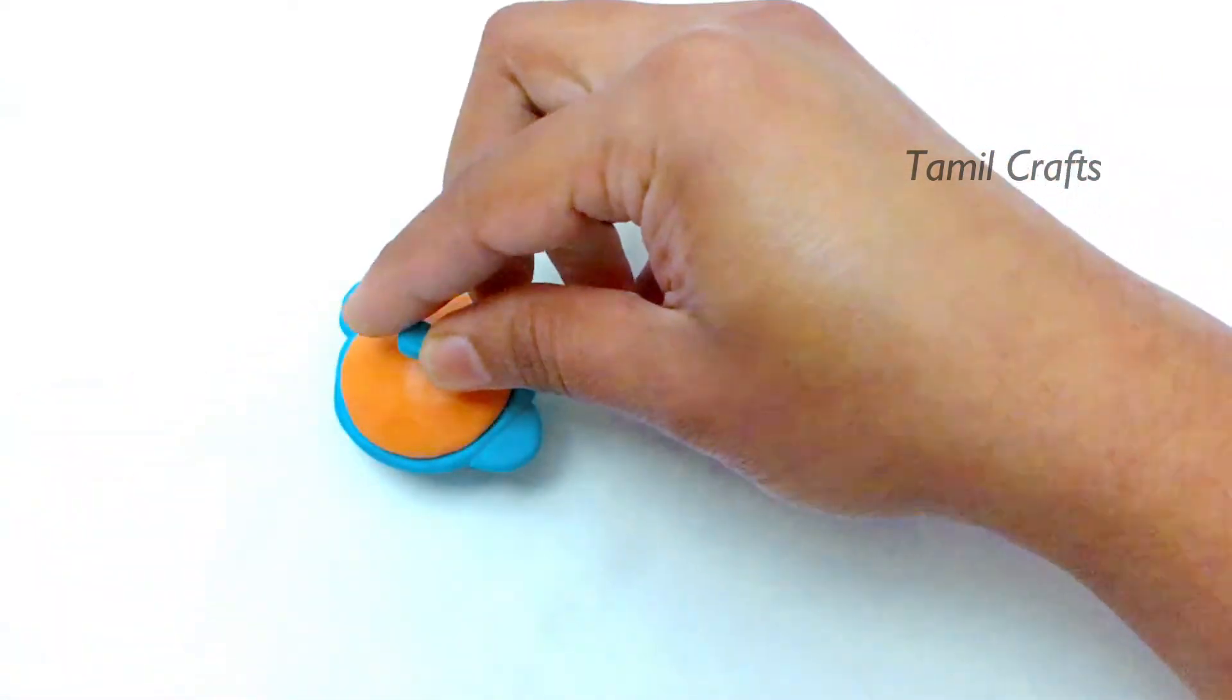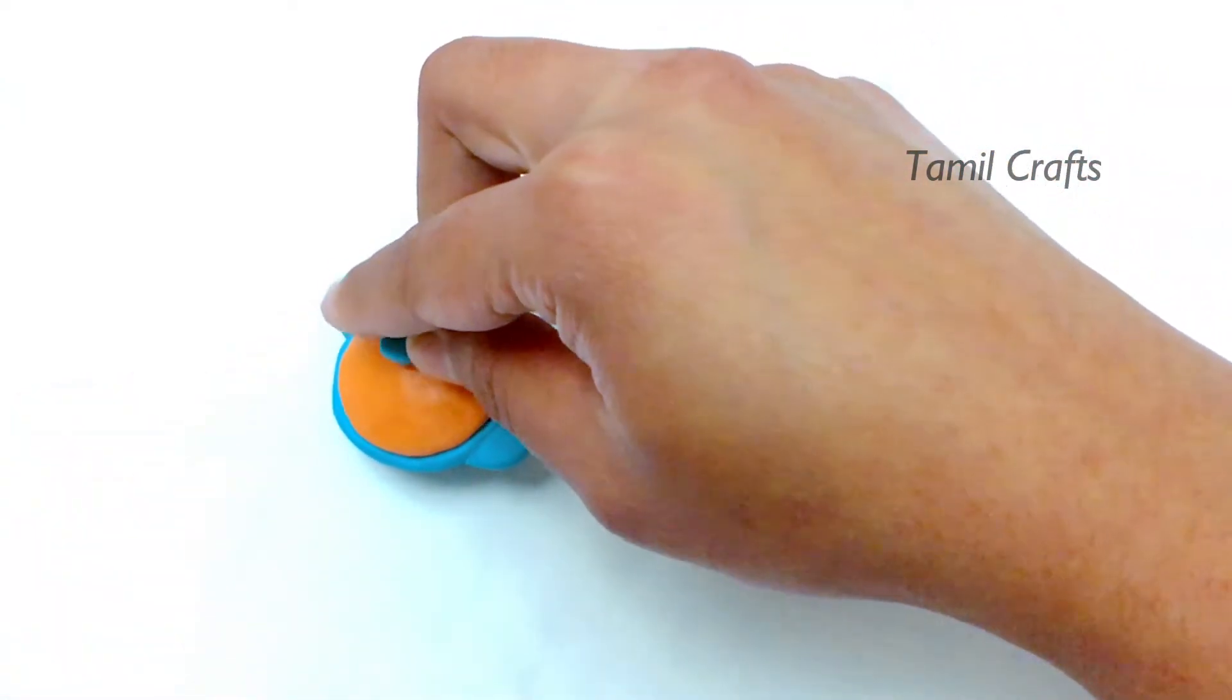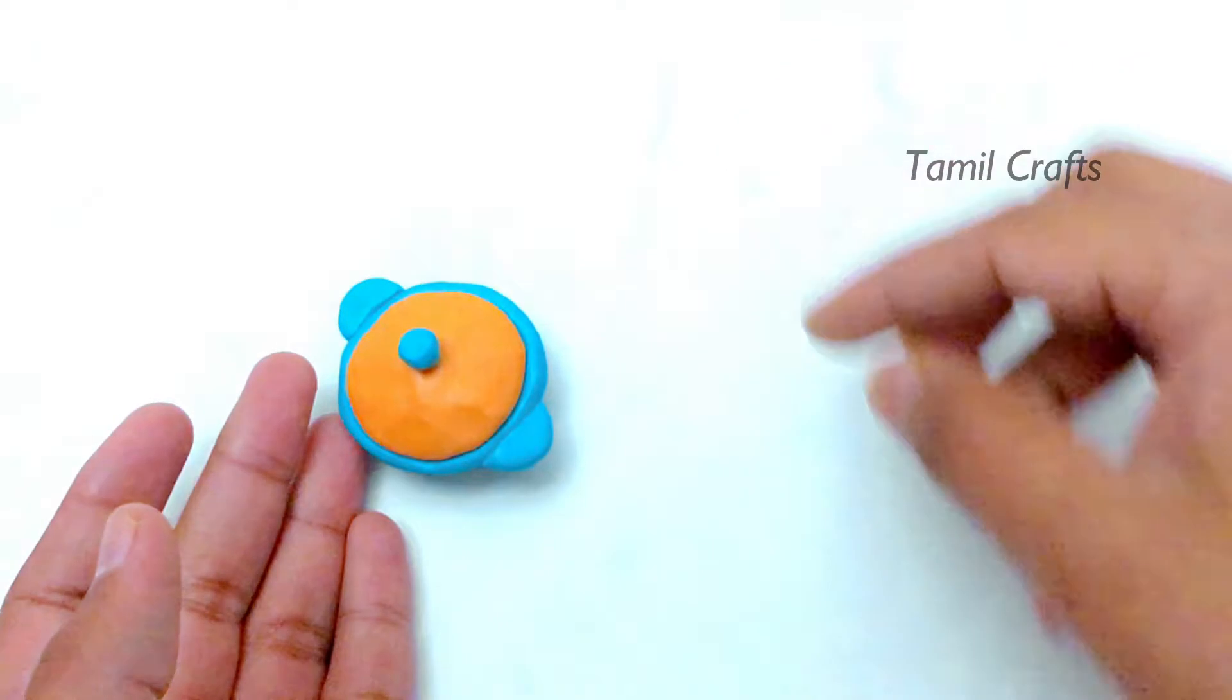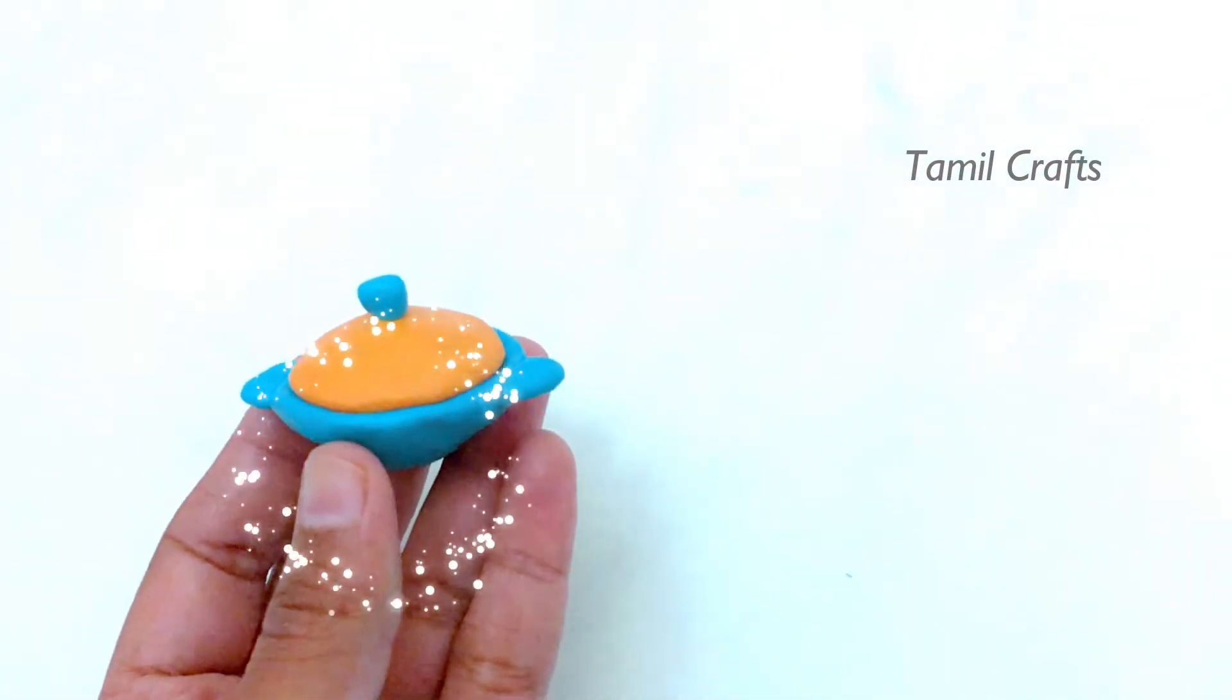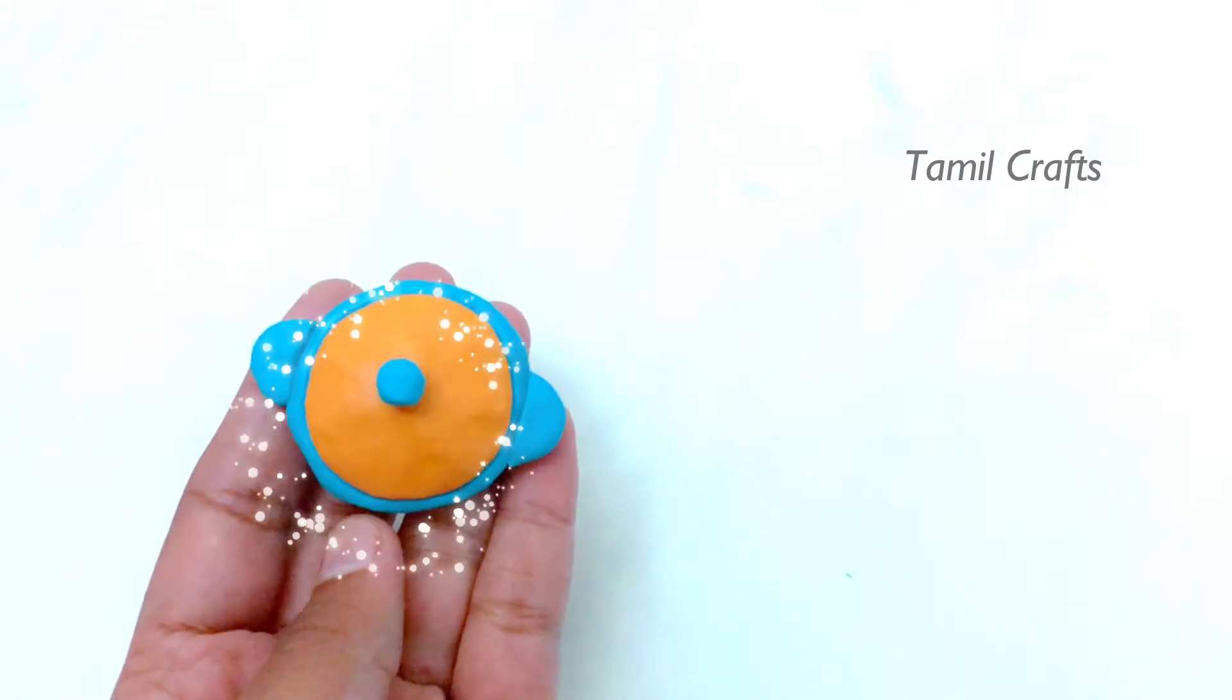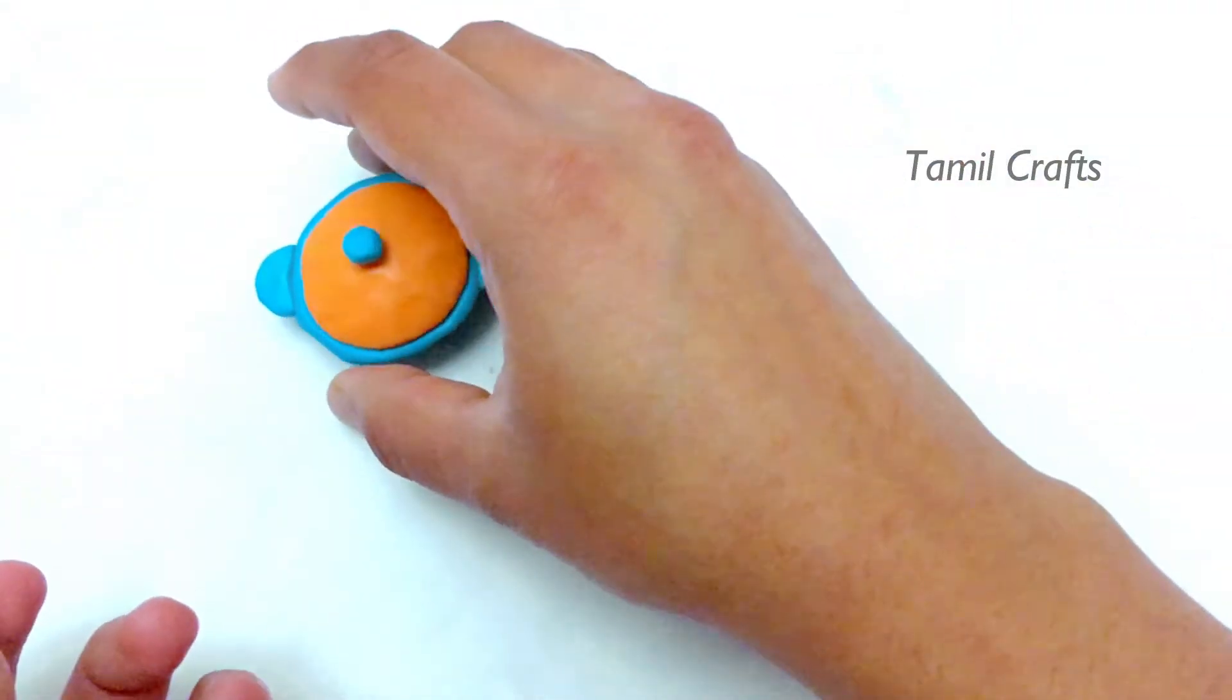I will add a small triangle like this, making a cone shape. Add it to the center. Cut and it's ready. This will be the cap.